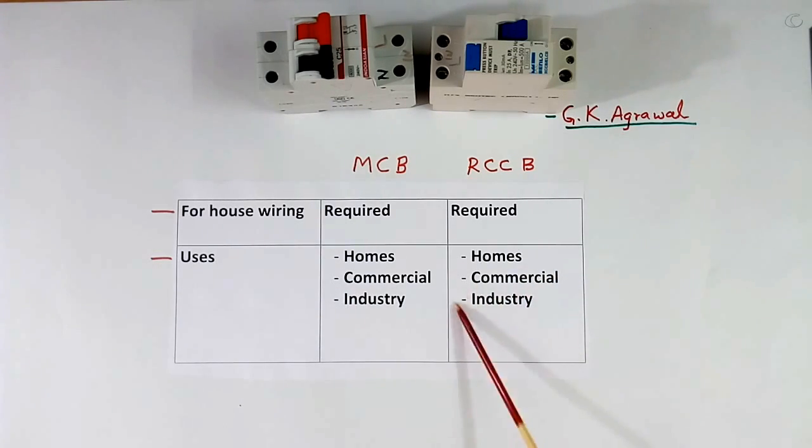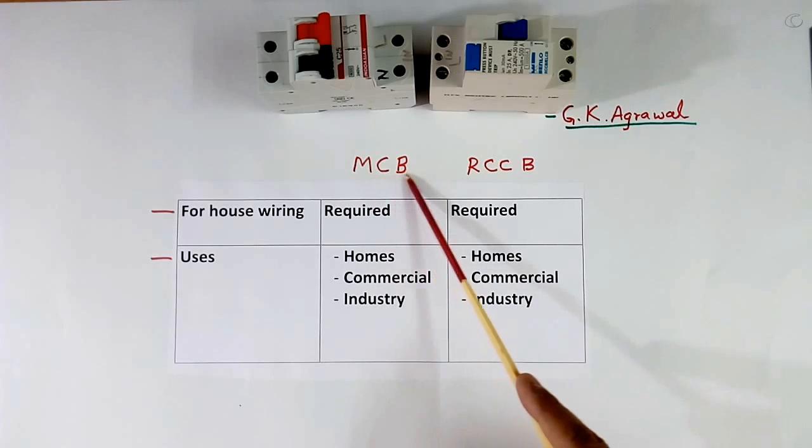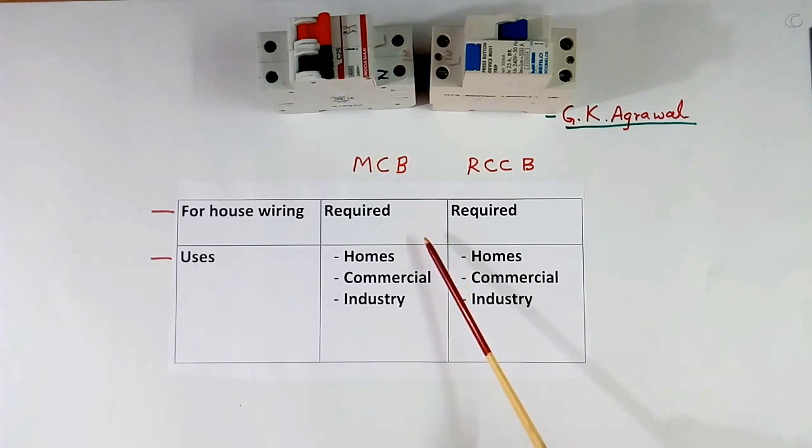In industry, when load is less, then we use MCB. If load is more, we use MCCB.